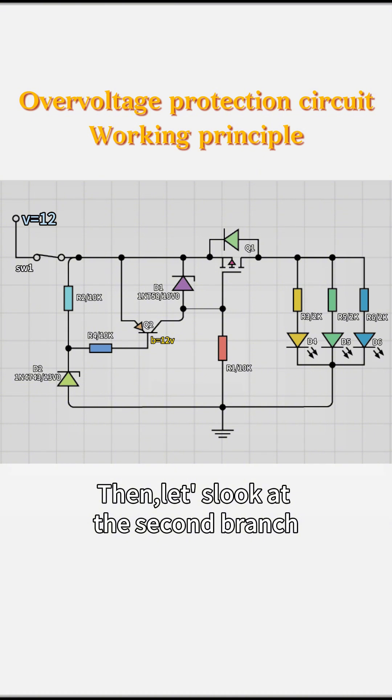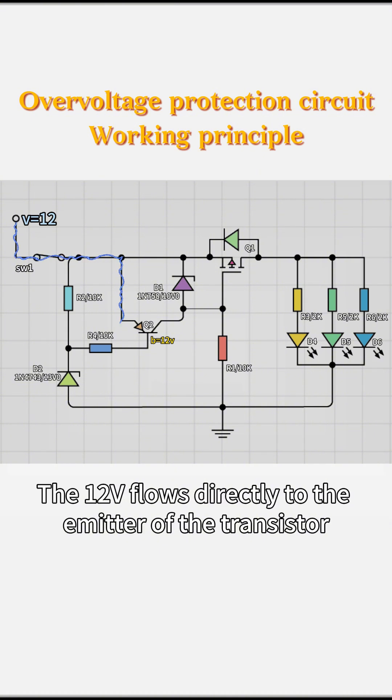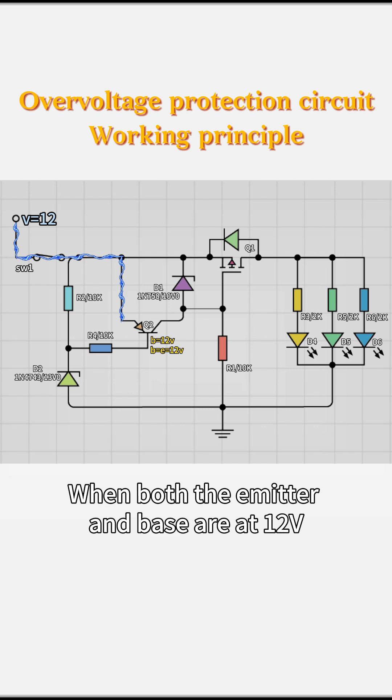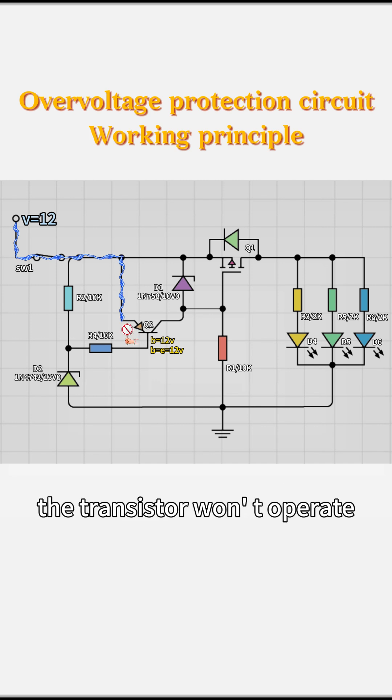Then, let's look at the second branch. The 12V flows directly to the emitter of the transistor. When both the emitter and base are at 12V, the transistor won't operate and won't conduct.